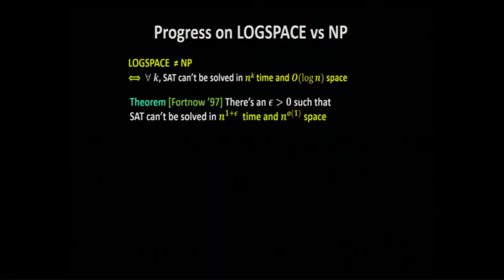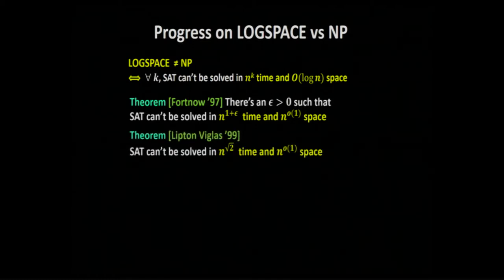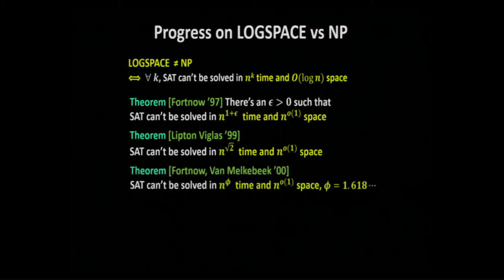Lance proved there is some epsilon such that SAT can't be solved in n-to-the-1-plus-epsilon time and sub-polynomial space. Then Dick Lipton and Tassels Viglas proved that SAT can't be solved in n-to-the-square-root-of-2 time in small space. And Lance and Dieter had very recently proved that SAT can't be solved in n-to-the-golden-ratio time in small space — creeping up ever so slowly through some very nice constants: square root of 2, golden ratio, and so on.